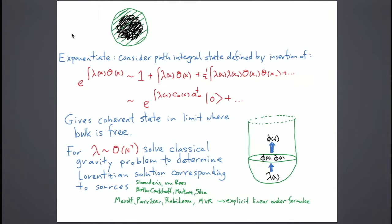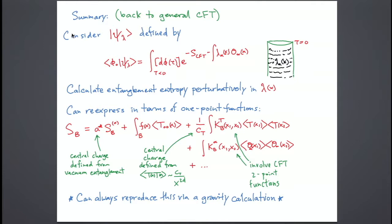In the context of ADS-CFT, it's possible to be very explicit about this. You specify a source λ(x), a function determining how much weight you give to inserting the operator at different positions, and there's an explicit map between those sources and the fields living in the spacetime. This kind of state — the vacuum path integral but with e^{−λO} inserted, which is like modifying the action by a source — corresponds to some classical perturbation around ADS. So this type of state, within ADS-CFT, is something we think corresponds to a classical perturbation.